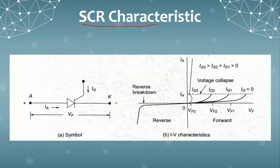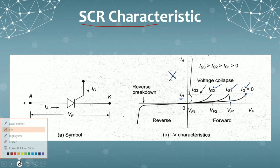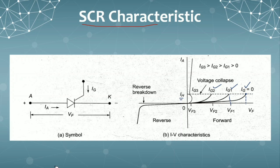I have two more points to note here. This is the forward breakover voltage for the first case where IG equals 0; when IG equals 1, this is the second one, this is the third one, and this is the fourth one. This is the holding current. When the voltage reaches the breakover voltage, the current will drop to a certain current value which is called holding current. After it reaches the holding current, it will gradually and linearly increase. This is about the SCR characteristic.